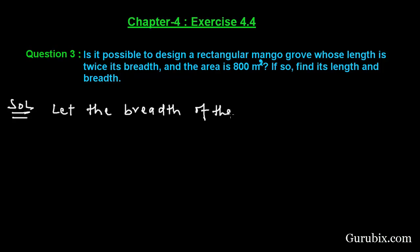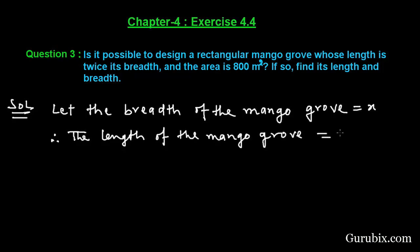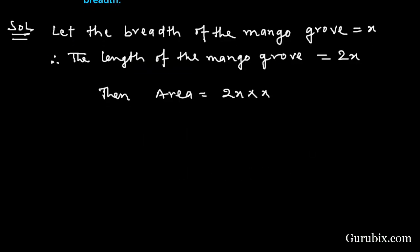So let us see how to solve this question. Let the breadth of the mango grove equal x. Therefore, the length of the mango grove would be 2x. Then area will be 2x times x, which equals 2x squared.